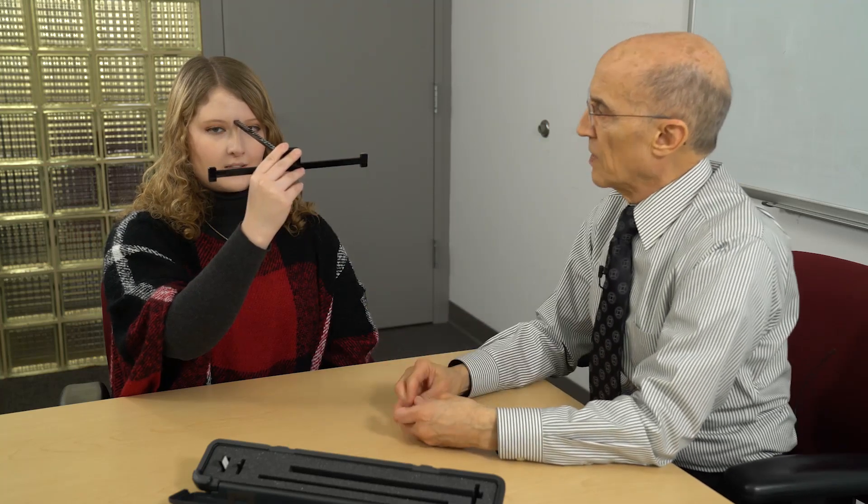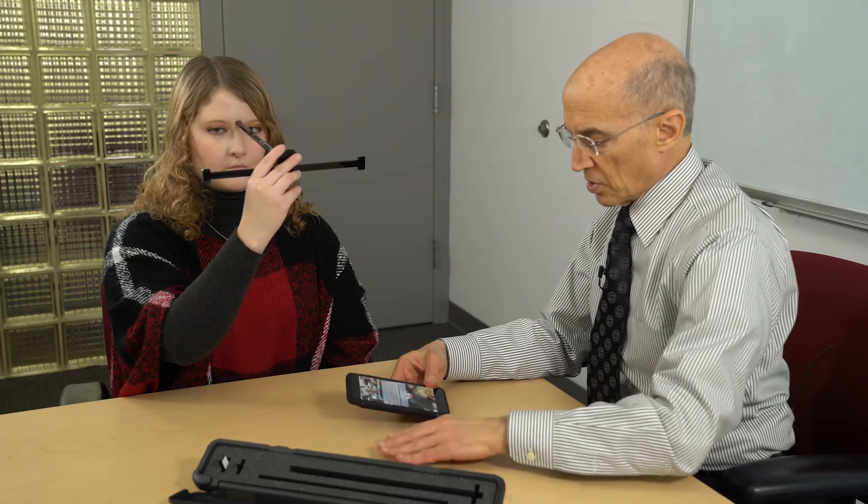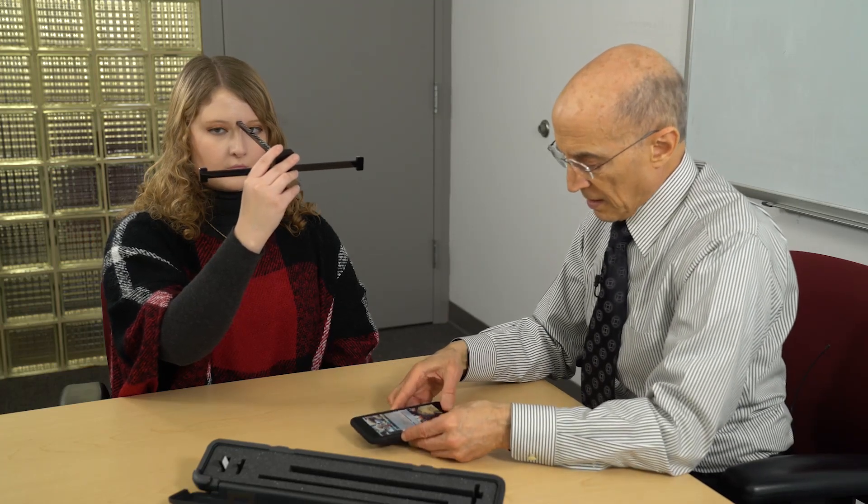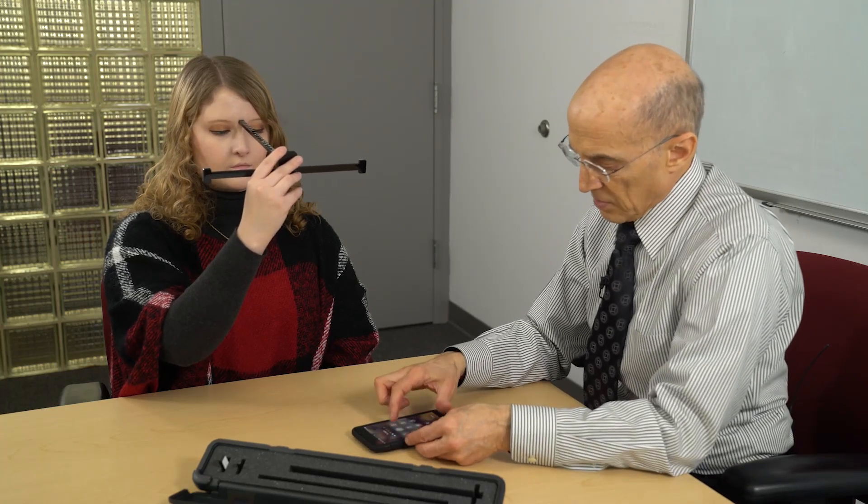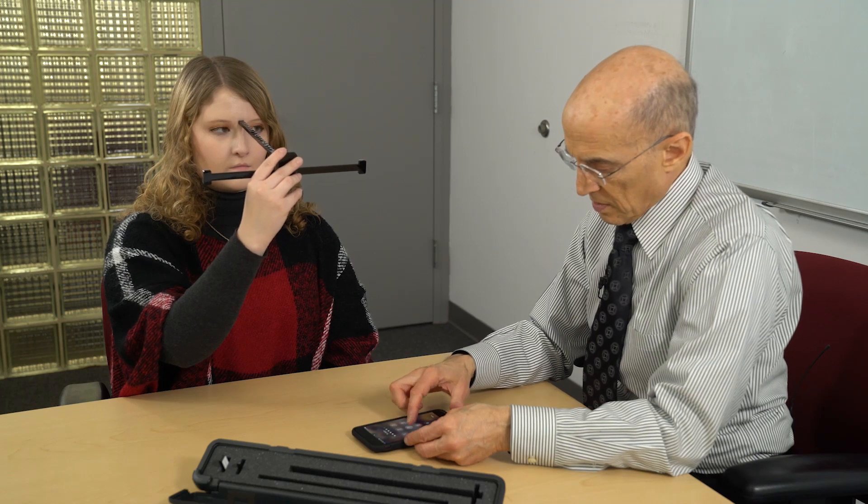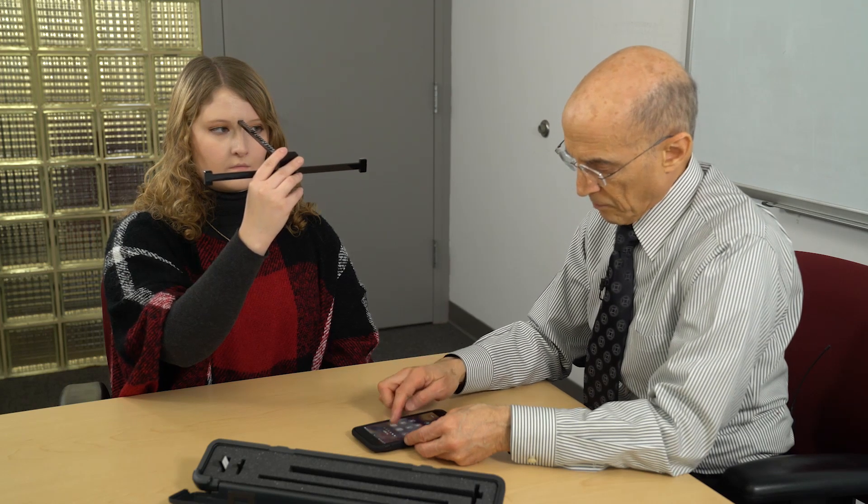Great. So do you notice there's an X here and an X over there? Yes. So what I want you to do over the next minute, I'm going to time you. You're going to do this for one full minute. Let me get my timer ready. And you're going to do it as quickly as you can. I want to see how many times you can go back and forth in one minute. Okay. Okay, I'll tell you when to start. Ready? Begin.